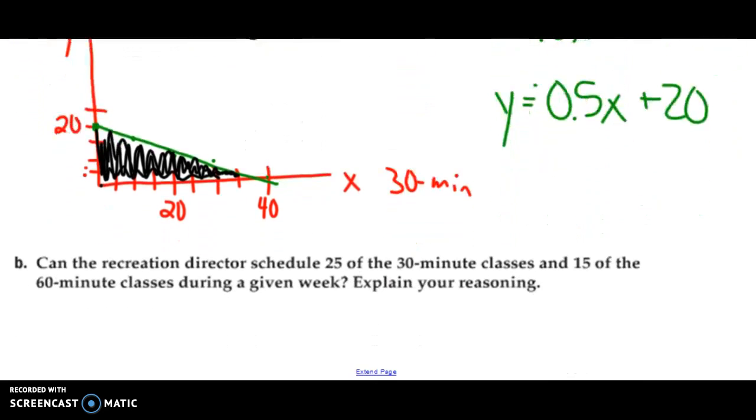Now, part B says, can the recreation director schedule 25 of the 30-minute classes and 15 of the 60-minute classes during a given week and explain your reasoning? Well, what I could do first is I could look to see if that would be in my bounded region. So 15 and 5 would be like right there. It looks very similar to on the graph. I can't truly tell if this works or not.